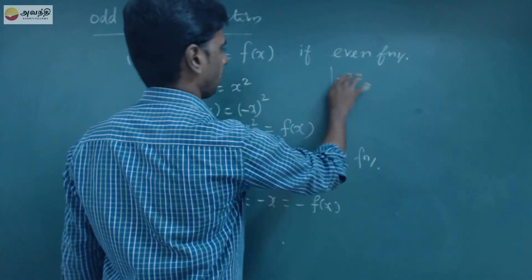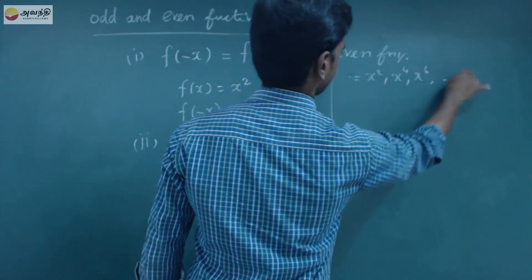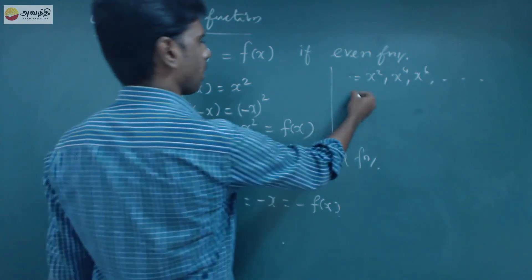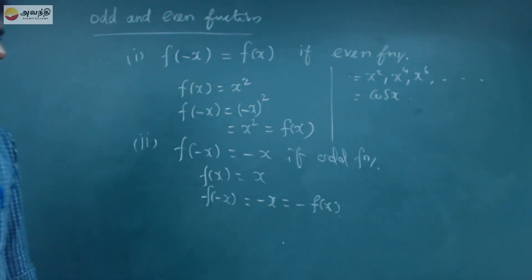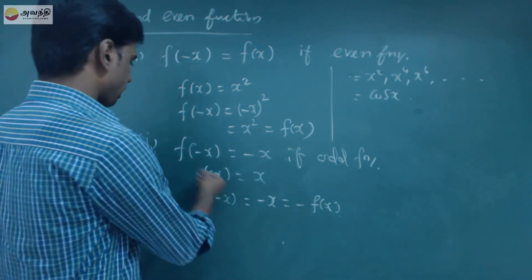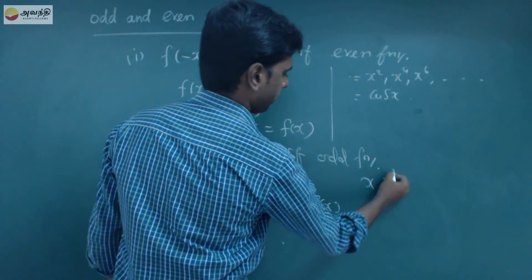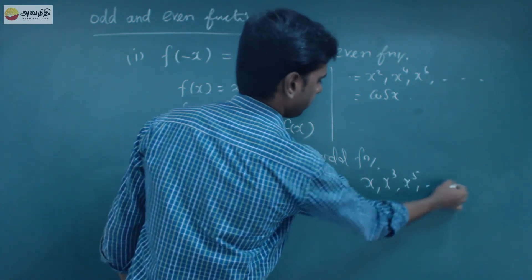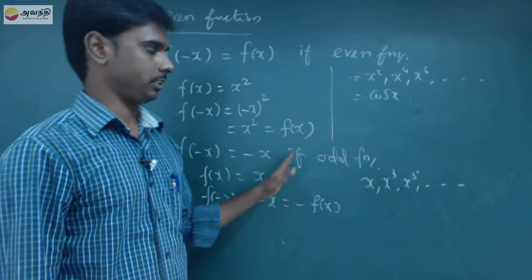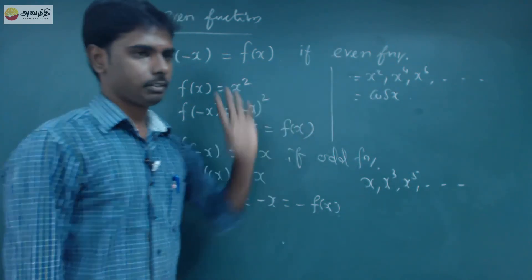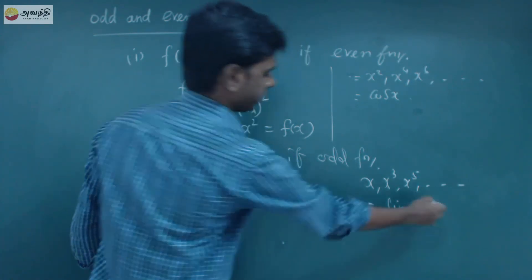For even functions: x squared, x to the power 4, x to the power 6, and so on. In trigonometry, cos x is an even function. For odd functions: x, x cubed, x to the power 5. If the degree is an odd number, it is an odd function; if even, it is an even function. Sin x is also an odd function.